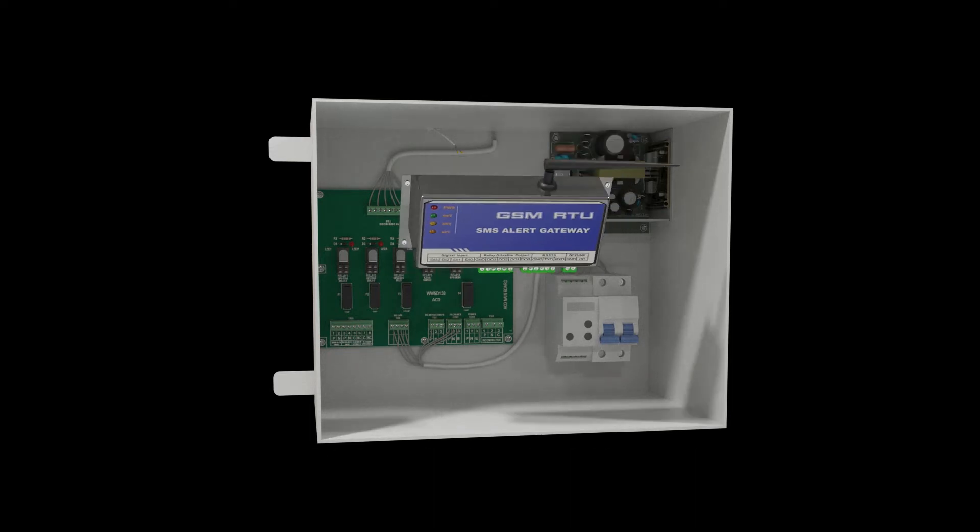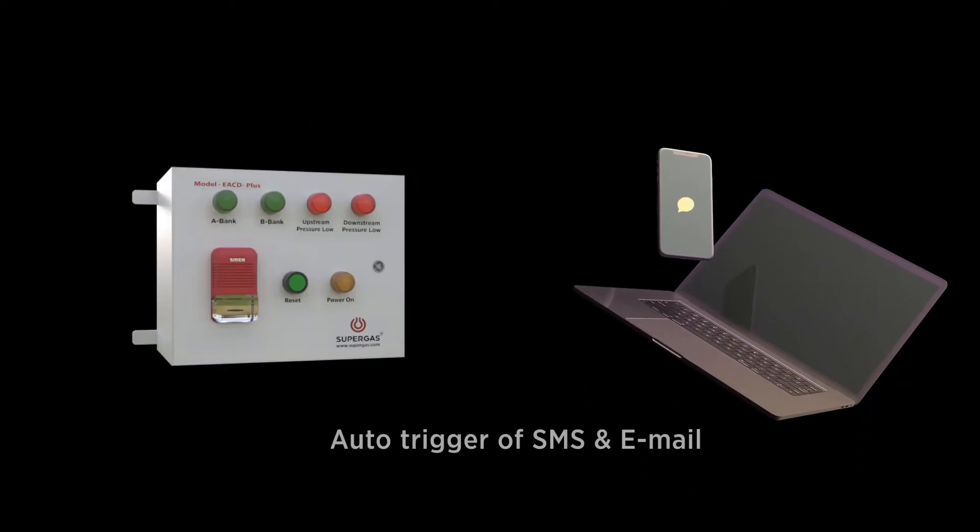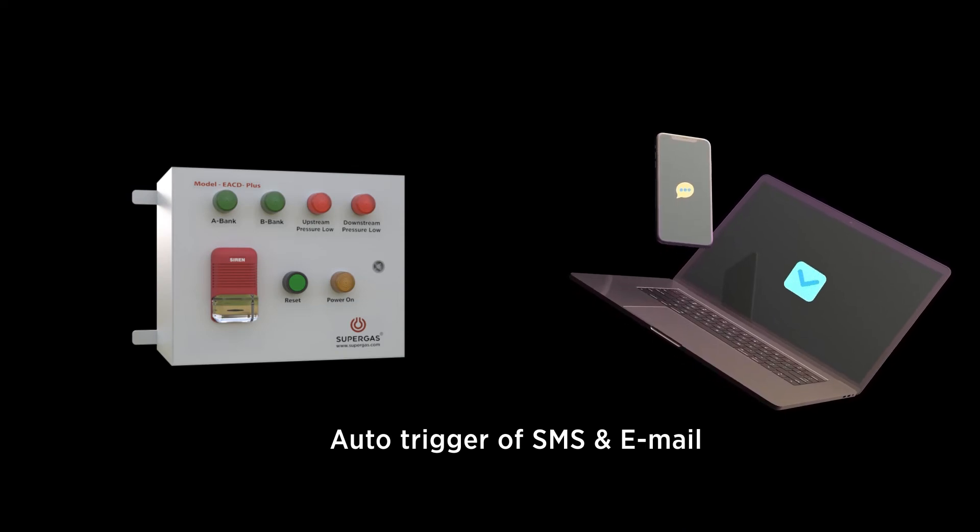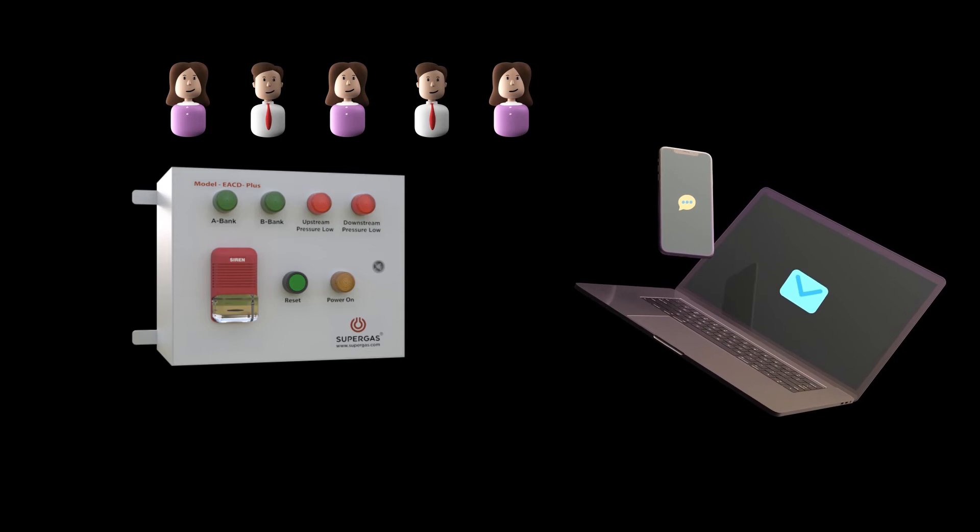Upon receiving low-pressure signal in the working bank from the pressure switch, an auto-configured SMS and mail is triggered to the designated personnel up to a maximum of five members.